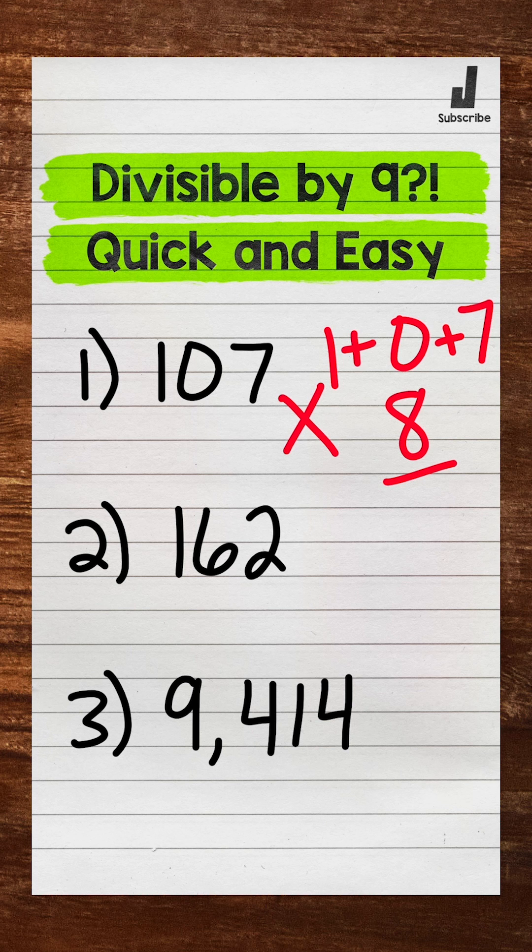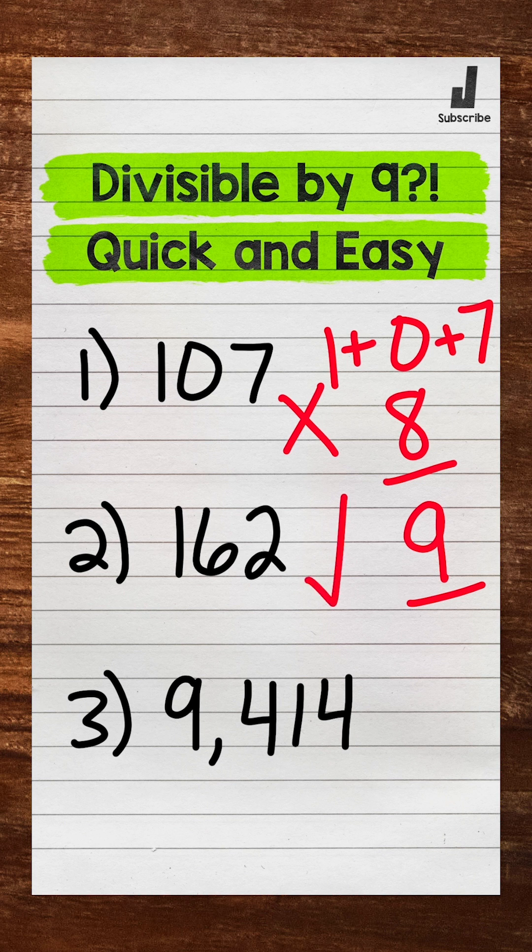For 162, we have 1 plus 6 plus 2. That equals 9. 9 is divisible by 9, so 162 is divisible by 9.